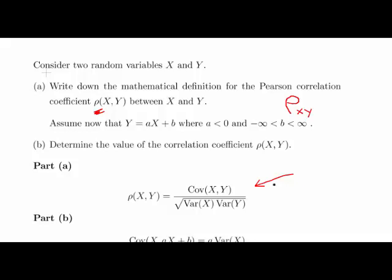So let's go to Part B and we're going to pick up from here. Assume now that the value of Y equals aX plus b which is to say it's a linear transformation of the variable X. Where a is less than 0. Now that's actually important.